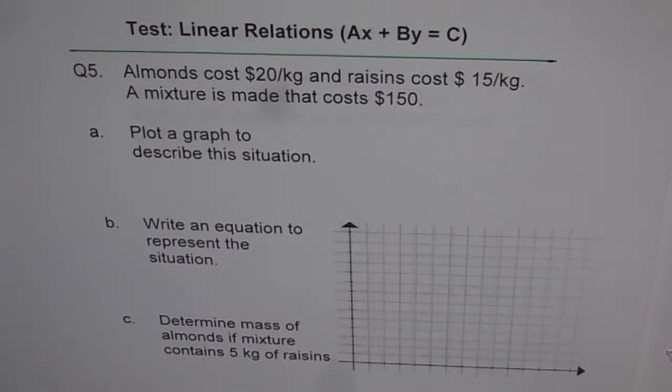Question number five is: Almonds cost $20 per kg and raisins cost $15 per kg. A mixture is made that costs $150. Plot a graph to describe this situation. Part B is, write an equation to represent the situation. And Part C is, determine mass of almonds if mixture contains 5 kg of raisins.